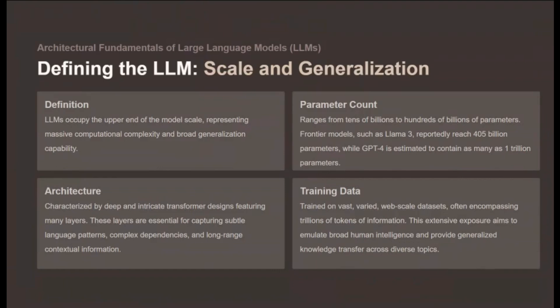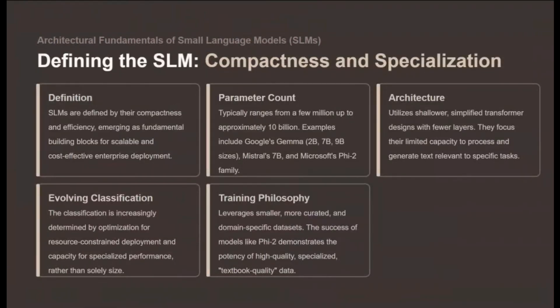In contrast, SLMs are defined by their compactness and efficiency. Their parameter counts typically range from a few million up to approximately 10 billion. Popular examples include Google's Gemma and Microsoft's Phi-2 family. Architecturally, SLMs utilize shallower, simplified transformer designs with fewer layers. Critically, the definition of an SLM is shifting away from being purely size-based — classification is now increasingly determined by optimization for resource-constrained deployment and capacity for high-quality specialized performance. SLMs function best as expert specialists in a narrow field.